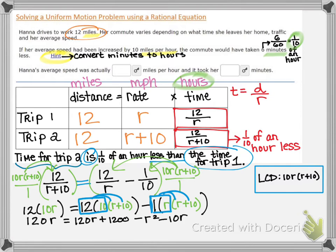Now we see that we have an exponent of two. So our goal is to get the equation set equal to zero and put into standard form. So after a little simplifying, we will get zero equals negative R squared minus 10 R plus 1200.